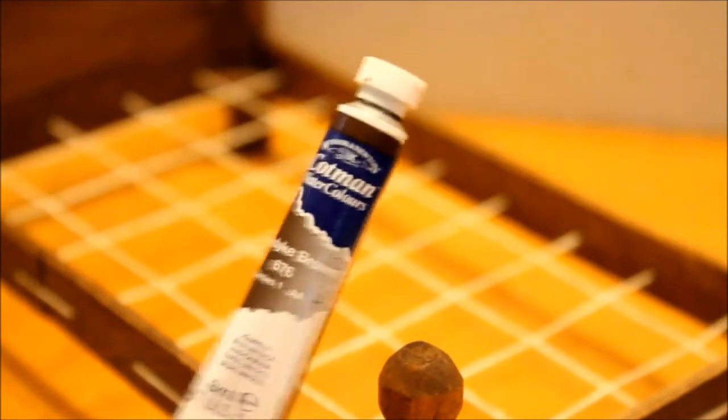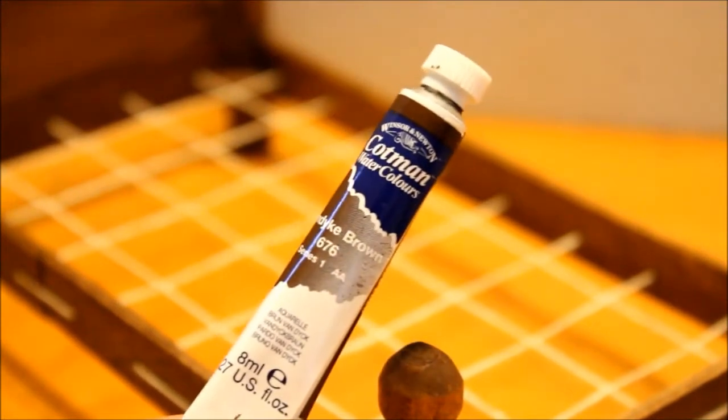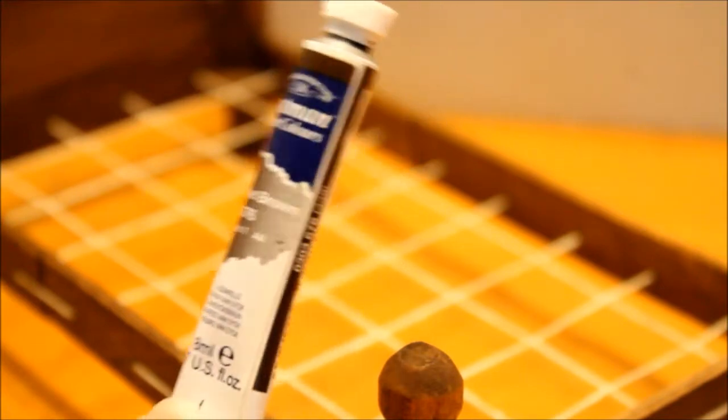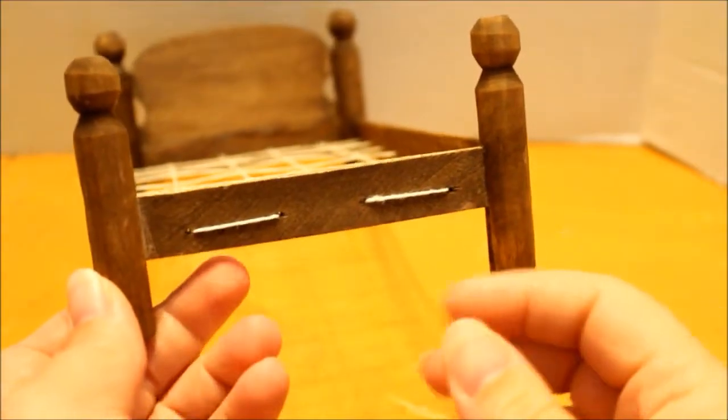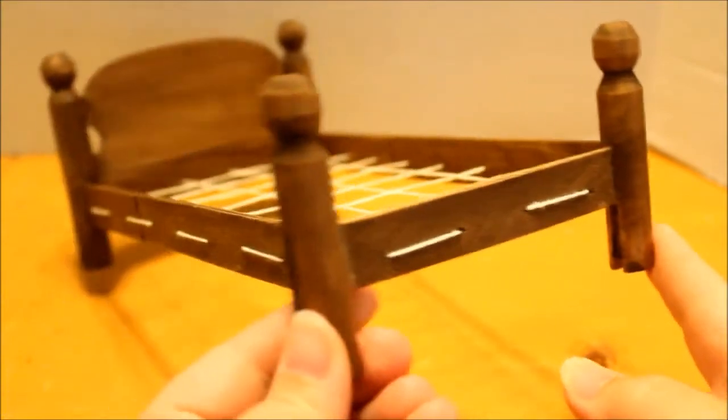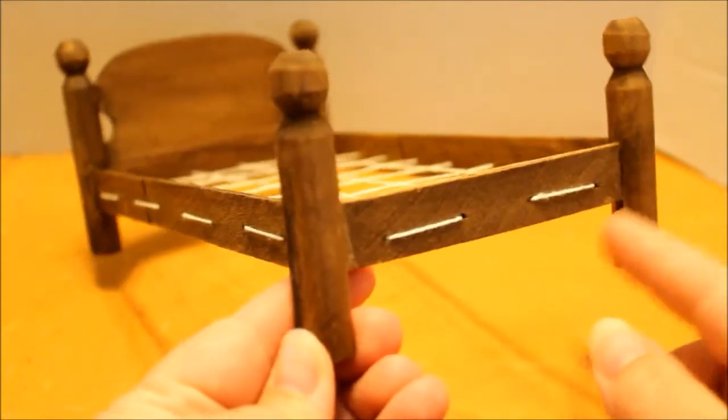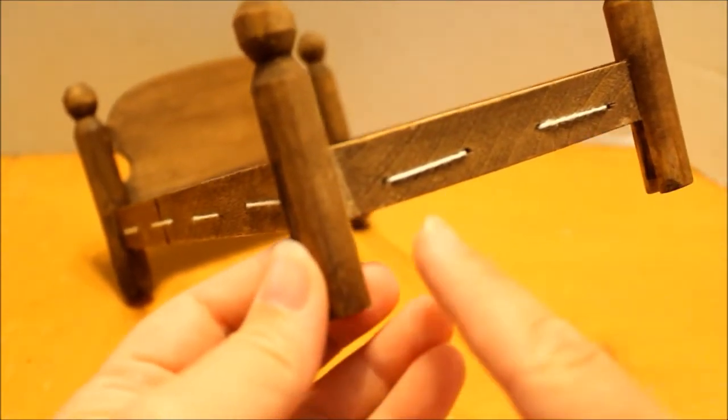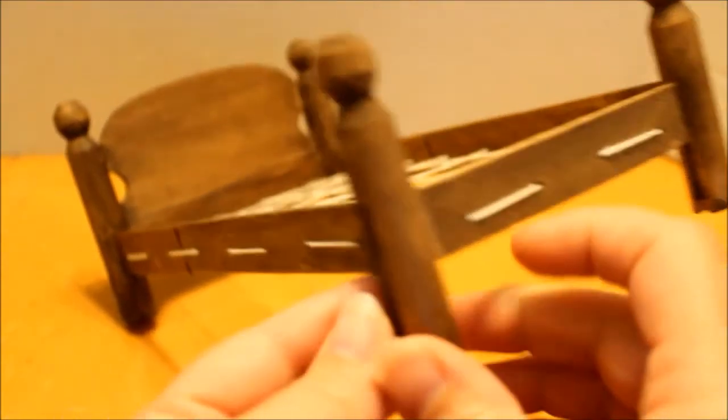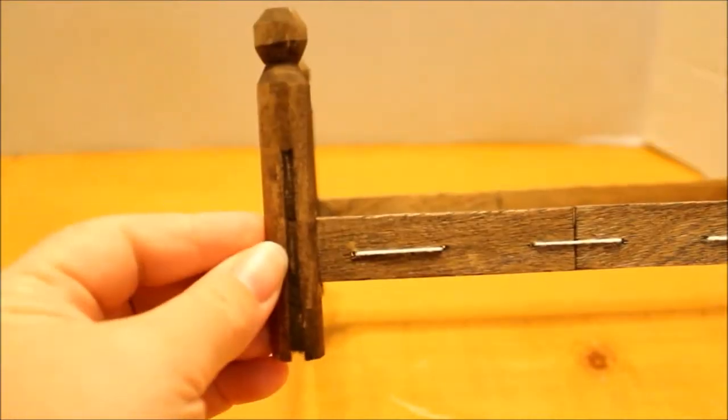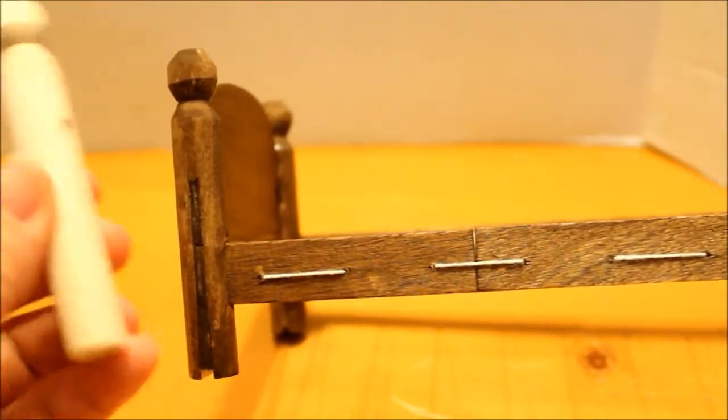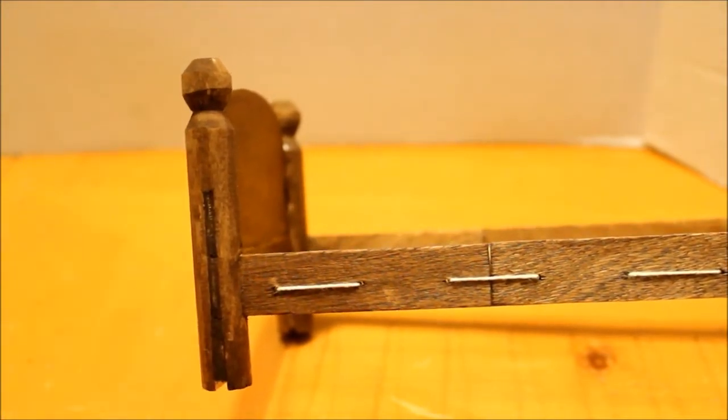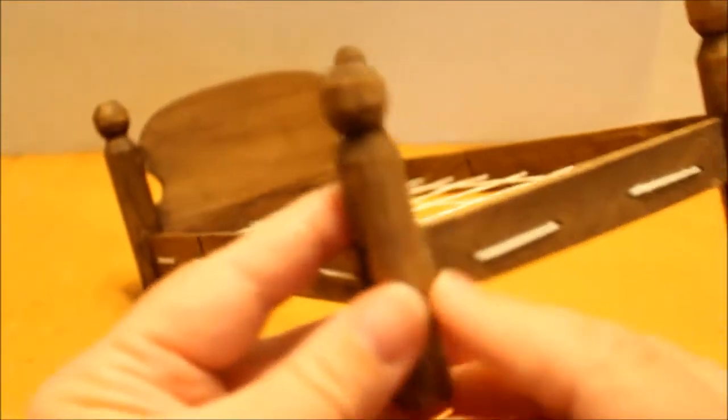So to begin making Addie's bed I took my four clothespins and I cut two of them down. These two are three inches tall and the two for the headboard are the same size as the way I bought it, so these two are cut down to three inches.